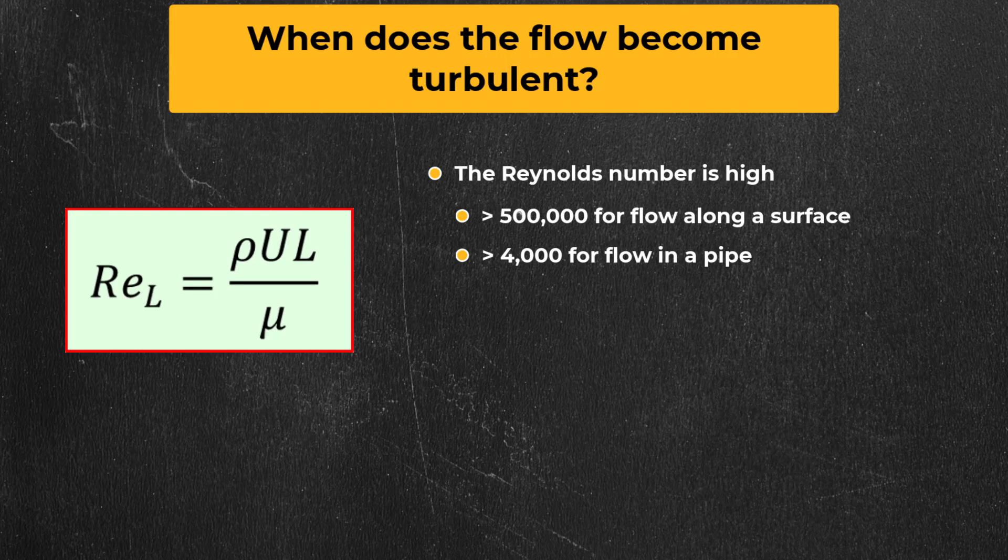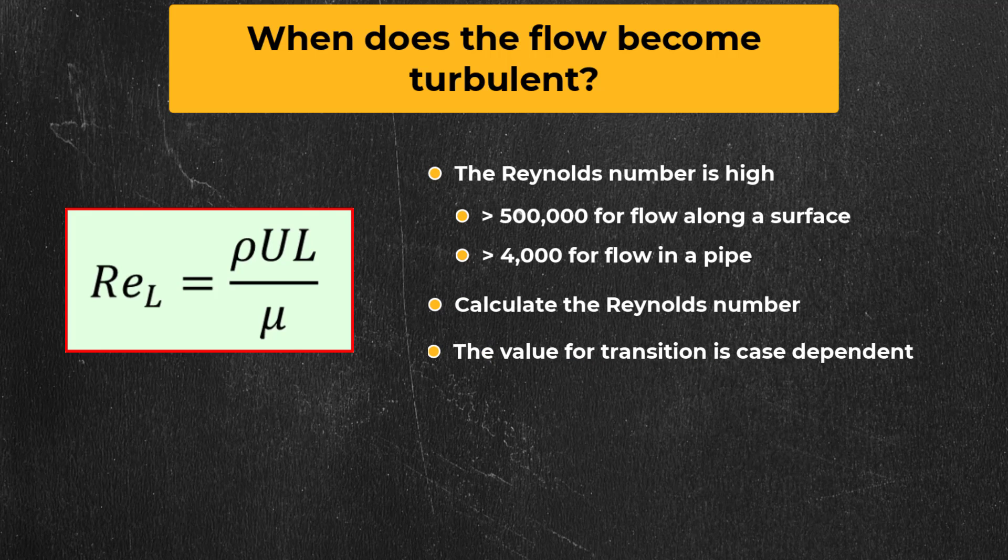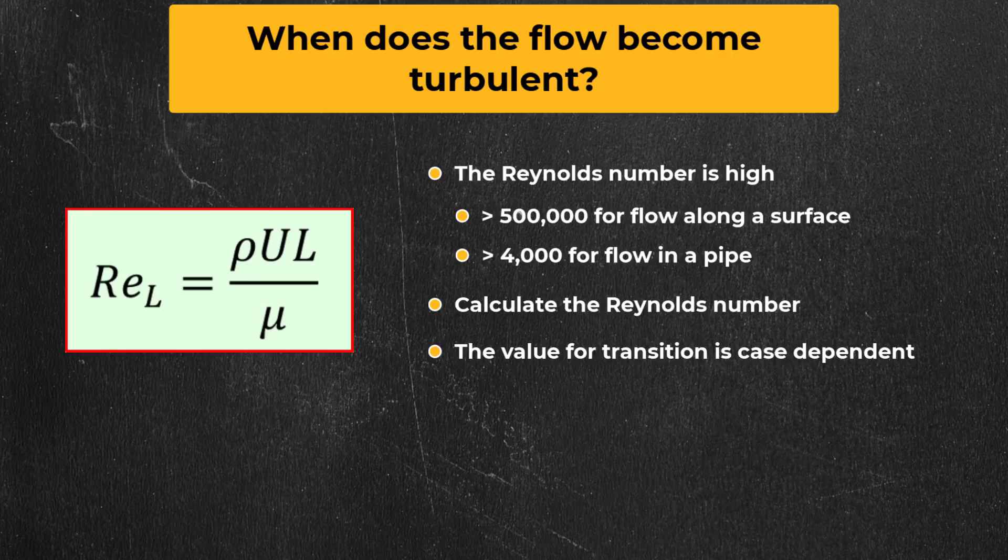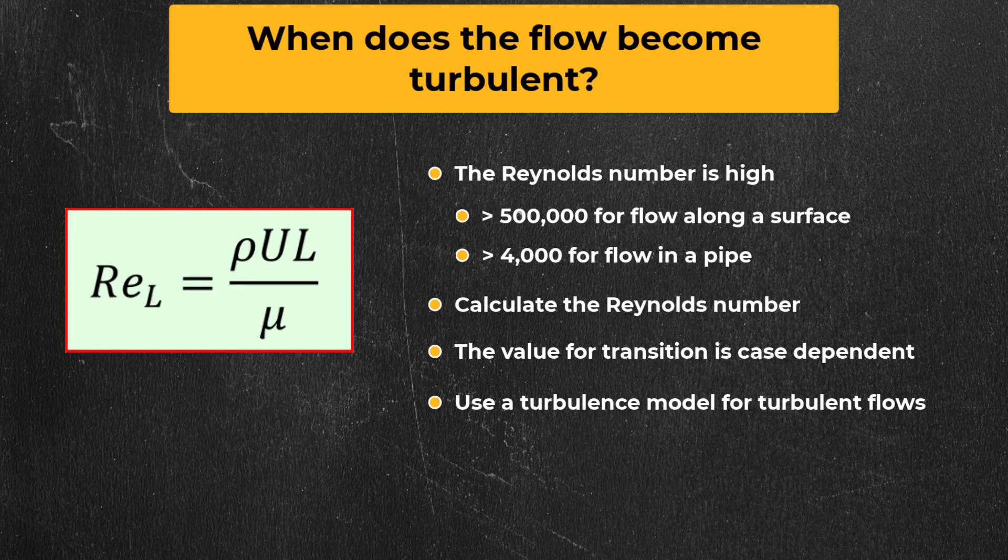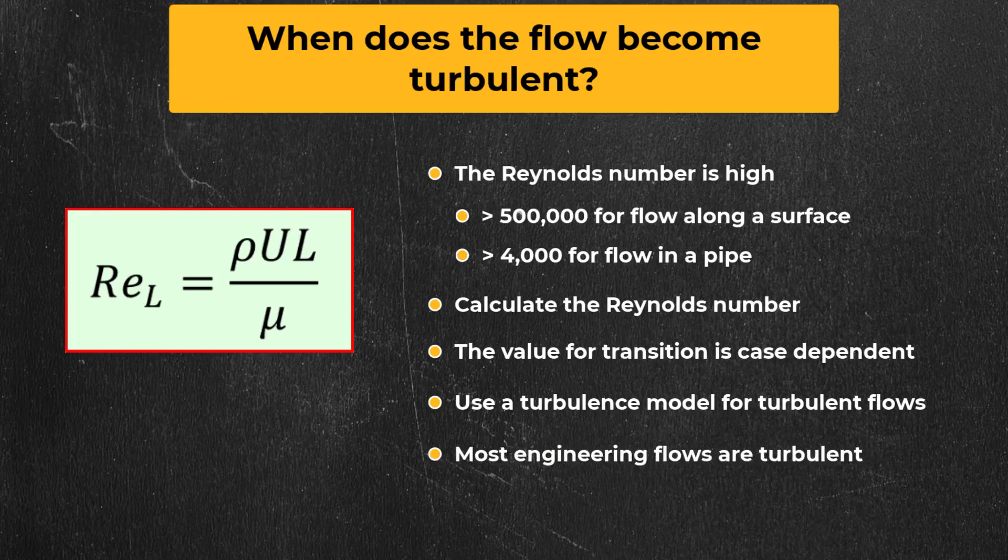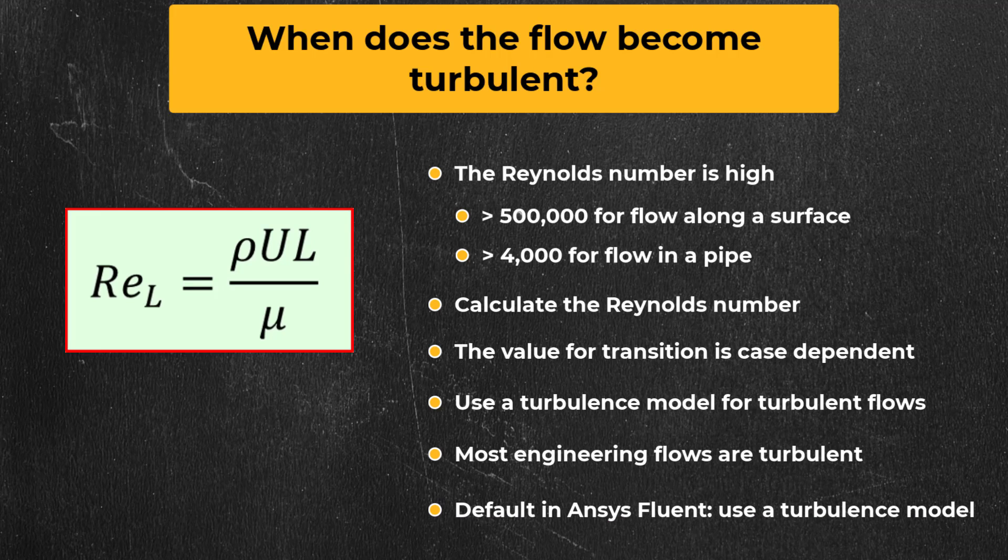So the takeaways are: you can calculate the Reynolds number to determine if the flow is turbulent. The value for transition to turbulence depends on what kind of flow it is. If the flow is turbulent, a turbulence model is required or else the results will be incorrect. Most engineering flows are in fact turbulent, so the default in Fluent is to use a turbulence model.